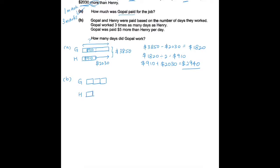Let's look up here. Initially we found that Henry was paid $910. So if this is $910, what about this? I would take $910 times 3, which would give me $2,730. But my question to you is, was he actually paid this amount? No. He was actually paid $2,940, so he was paid more. The reason for that is because the question says that Gopal was paid $5 more.